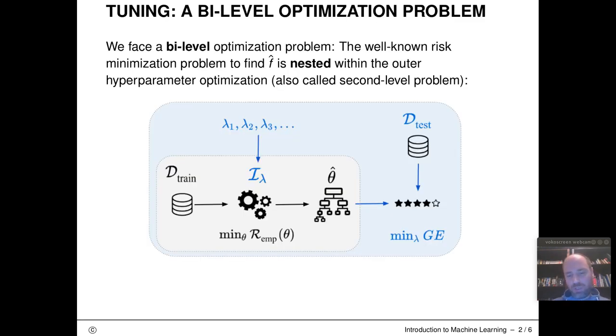And this is unfortunately kind of a bi-level optimization problem. So we have this well-known risk minimization problem that we are solving to find our model f-hat. So this is really what we usually mean when we say machine learning training.